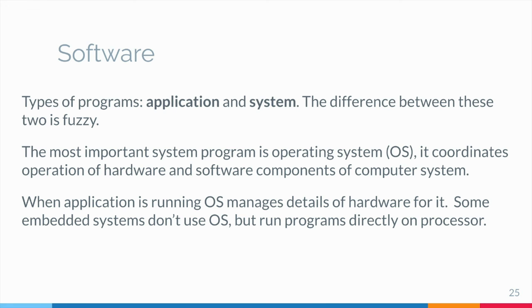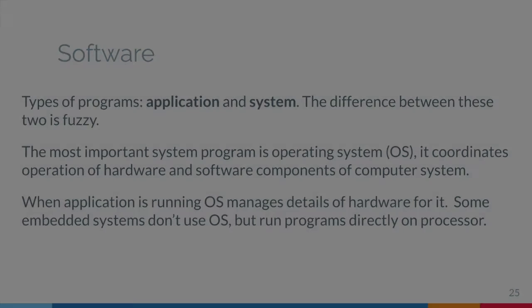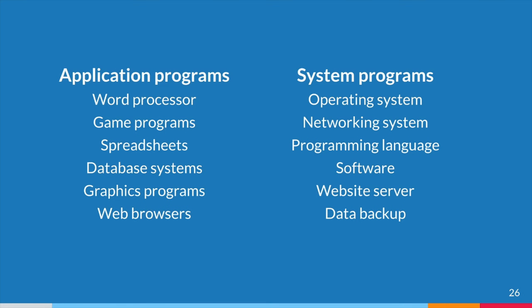For example, operating systems include Unix, Linux, Windows, System 10, and so on. Application programs include word processors, game programs, spreadsheets, database systems, graphics programs, and web browsers. System programs include operating systems, networking systems, programming languages, language software, website servers, and data backup.